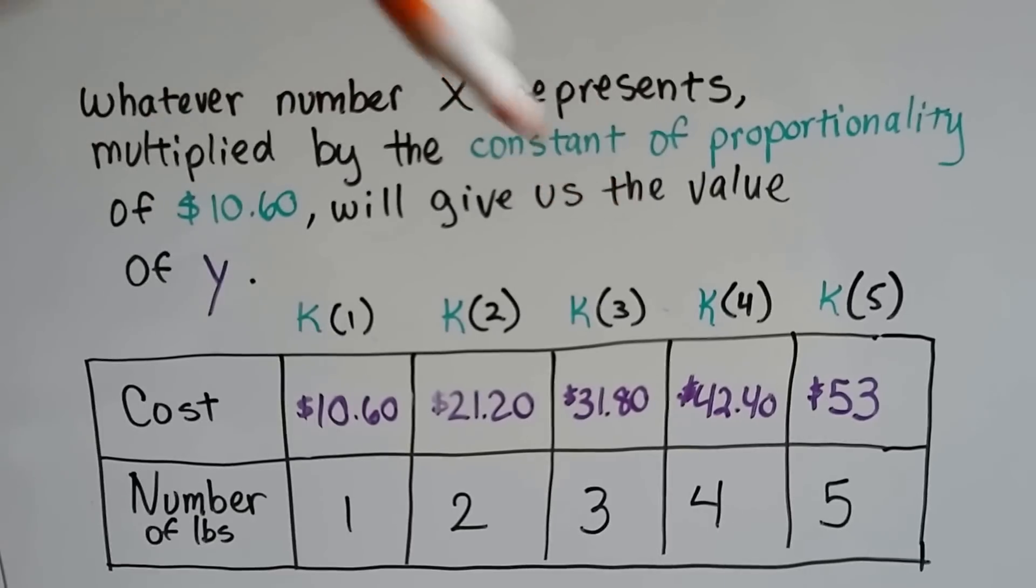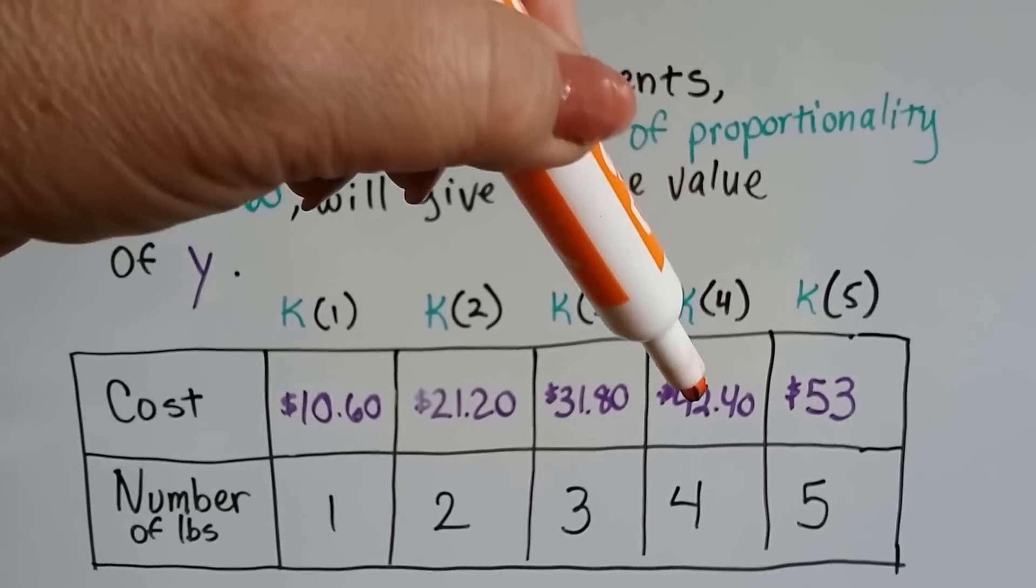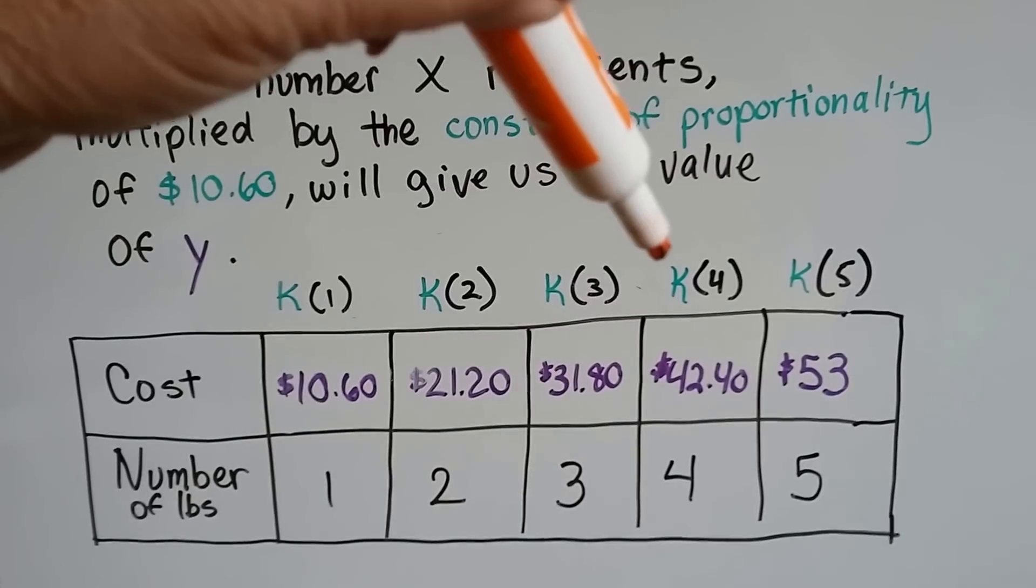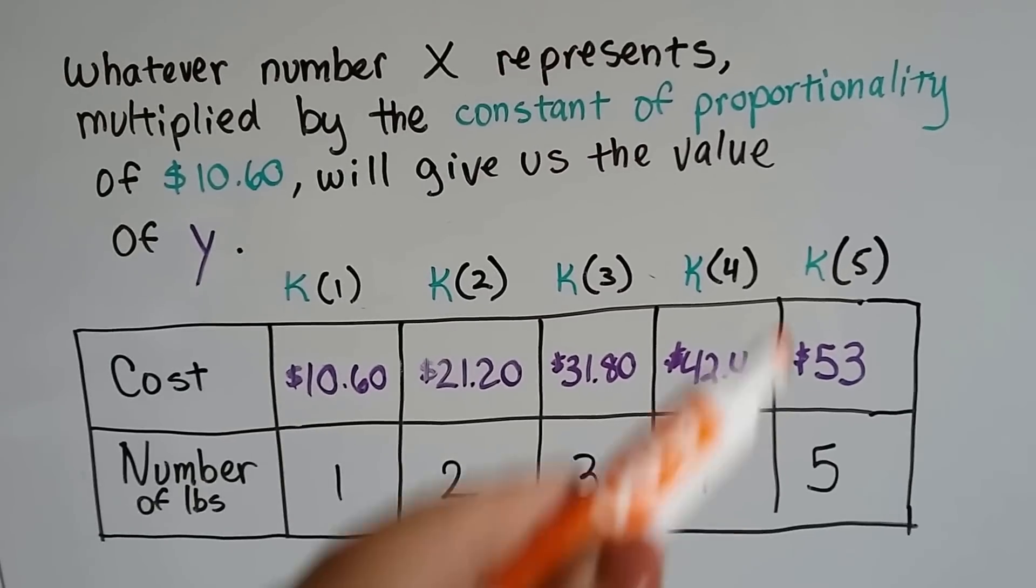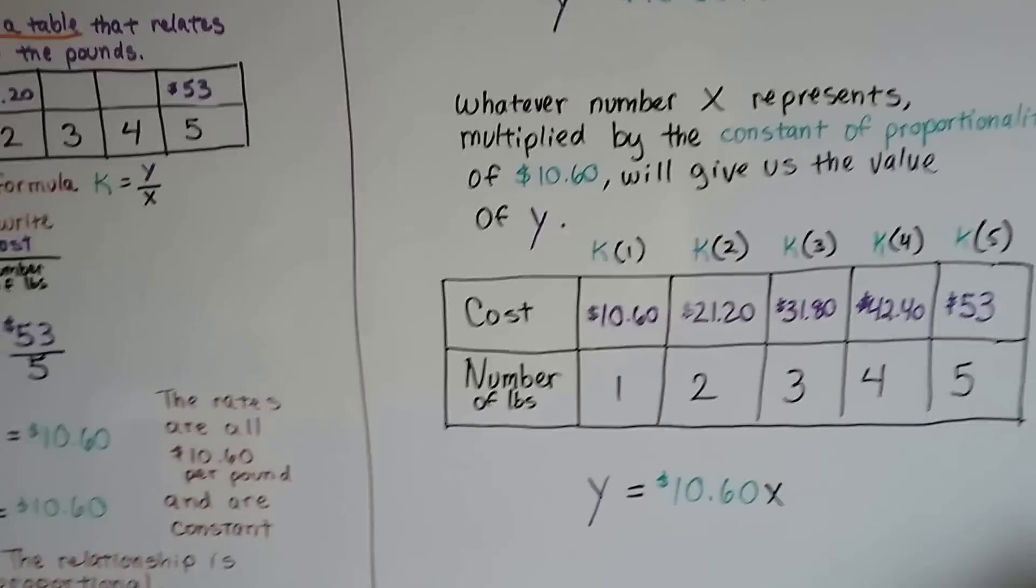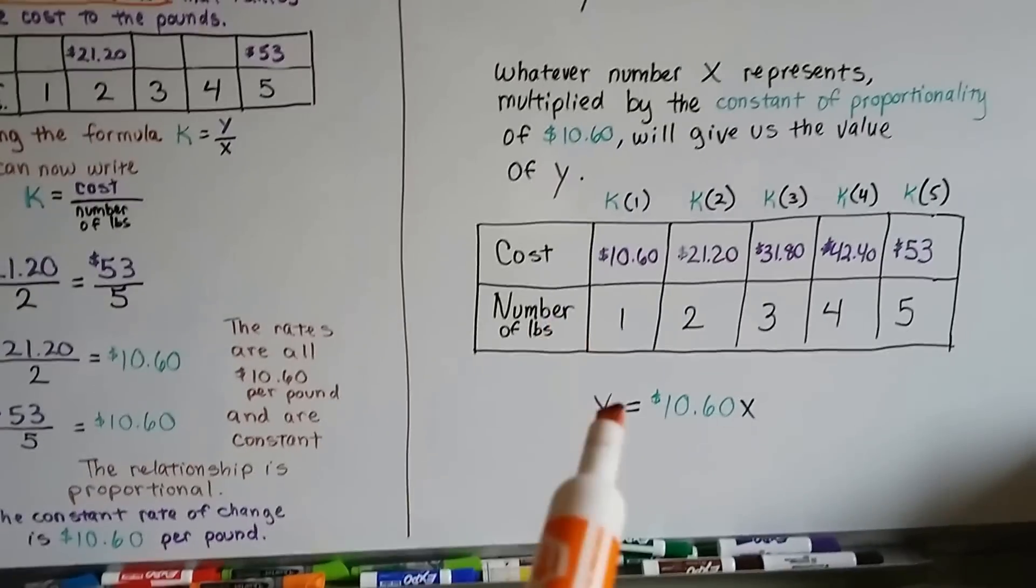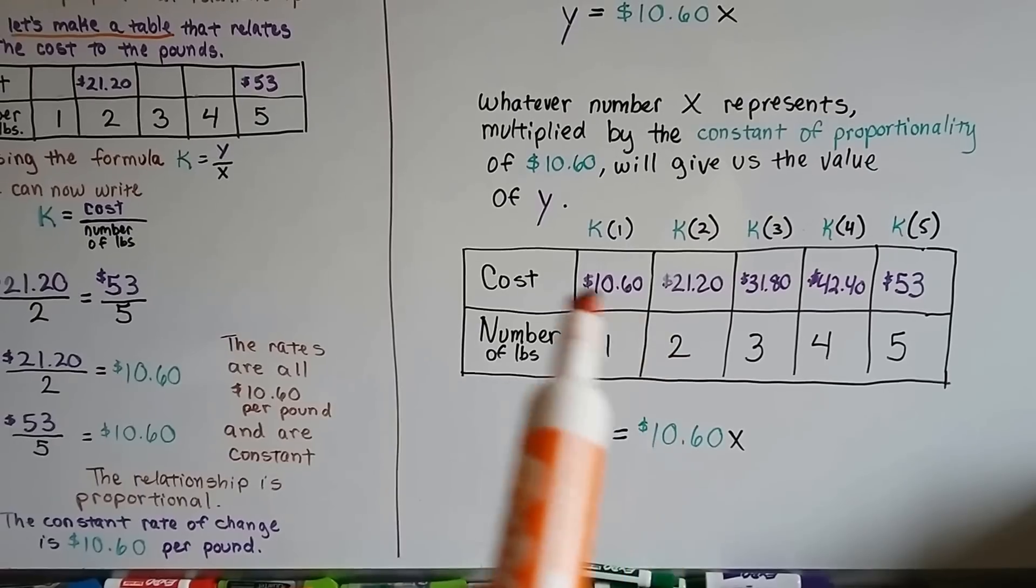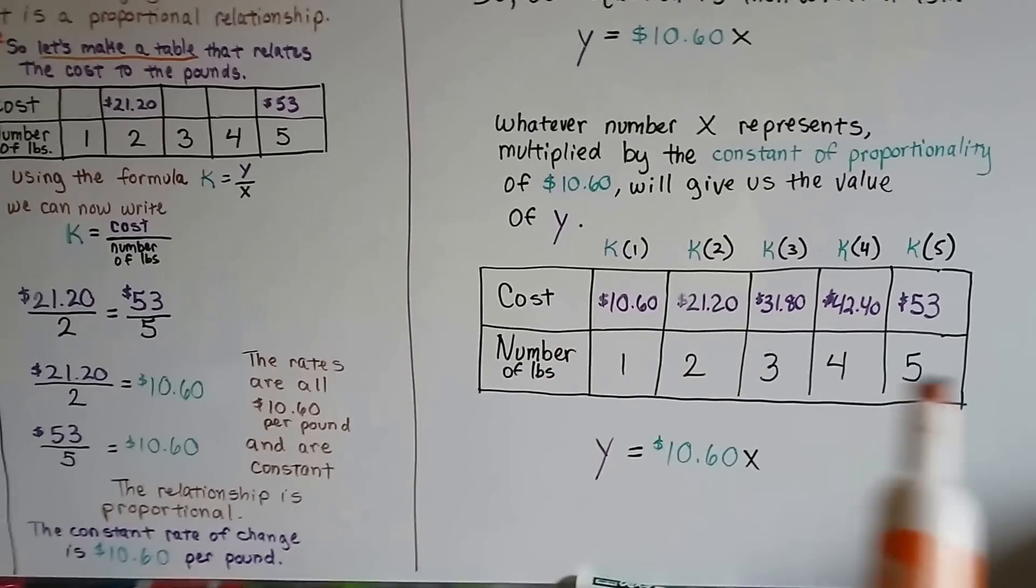If we multiply the 1060, the K, by 4, it gives us the cost of 4 pounds. And this cost of 4 pounds divided by 4 gives us the K back again. See how it's all interchangeable? That is how you write an equation for proportions. We end up with y is equal to $10.60 times x. And it's a constant rate of change.